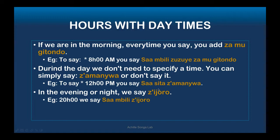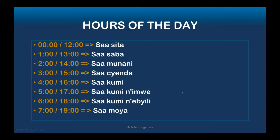Anyone can understand that you are saying it is 12 o'clock in the middle of the day. When it is evening or night, you say 'nijoro' after the hour. For example, for 8 PM you say 'sambiri nijoro.' That's how you specify the time of day.